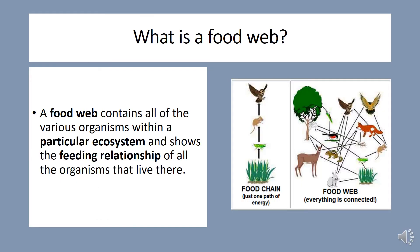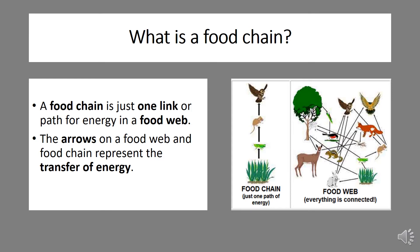To understand this concept, we have what's known as a food web. A food web contains all of the various organisms within a particular ecosystem and shows the feeding relationships of all the organisms that live there. A food chain is just one link or path for energy in a food web. The arrows on a food web and food chain represent the transfer of energy.